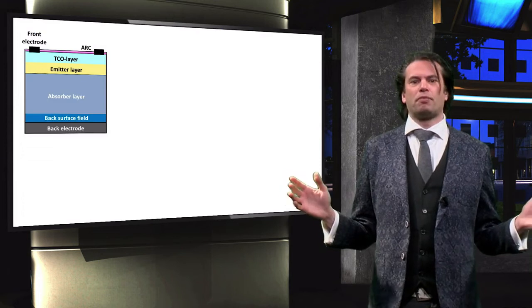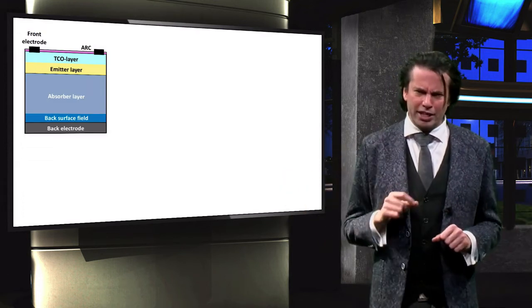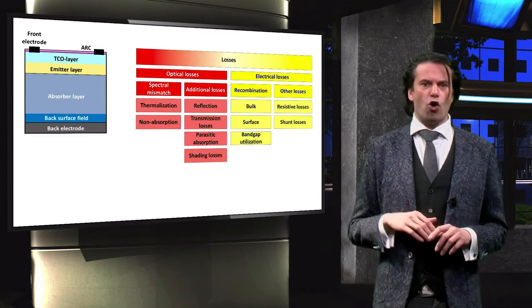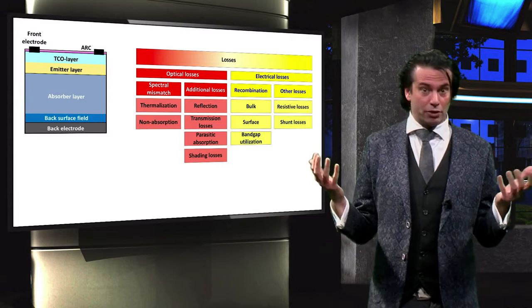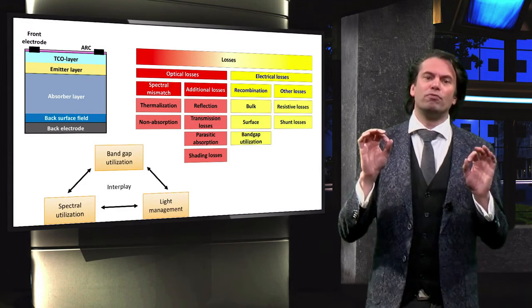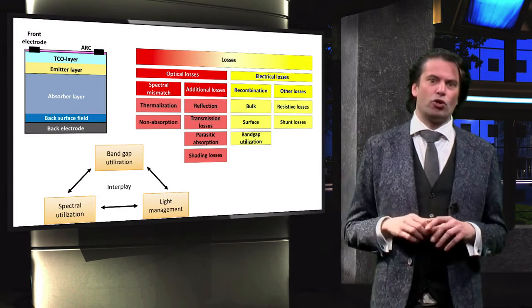In summary, we discussed the basic function of each of the layers in a standard crystalline silicon solar cell. We looked at an overview of the loss mechanisms that occur in any type of solar cell and derived from these the solar cell design rules. You have now come to the end of the last video of the introductory week. In the rest of this course, we will dive deeply into the physical and optical principles behind these loss mechanisms, and learn methods to tackle them as a photovoltaic engineer.